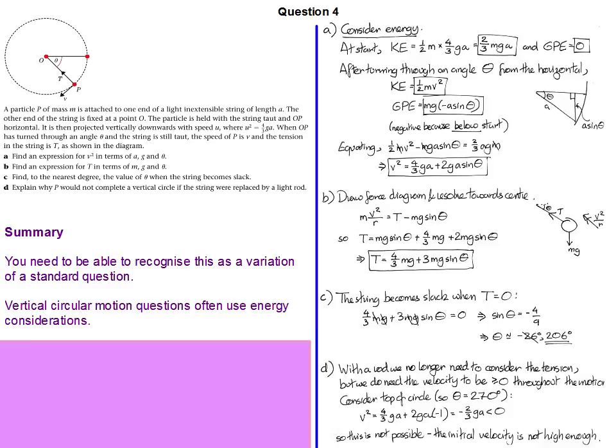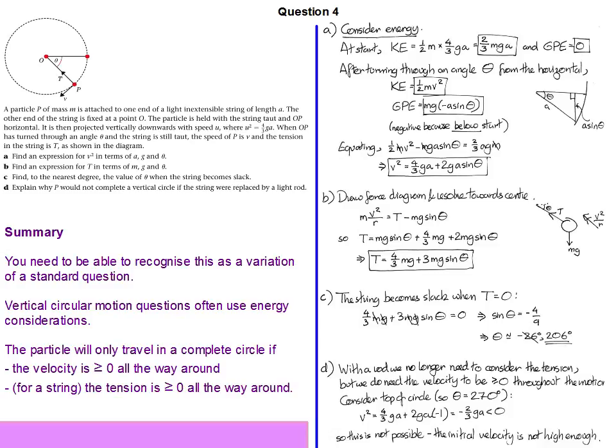In particular, you need to be prepared to use energy considerations in order to get some form of answer. We also need to have in our minds the conditions for being able to travel around a vertical circle. We need the velocity to be greater than or equal to zero and with a string, we also need the tension to work. In general, though, this was not that nasty a question of this type. I'm sure there are much nastier ones out there. Thank you.